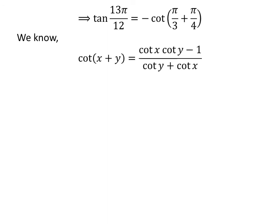We know the trigonometry identity: cotangent of x plus y is equal to cotangent of x times cotangent of y minus 1, upon cotangent of y plus cotangent of x. The proof of this trigonometry identity is given in the video appearing in the upper right corner of this video, and the link is also given in the description section.